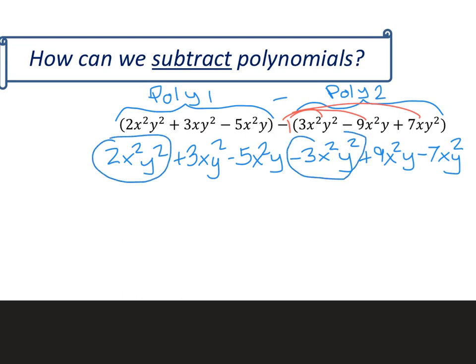So let me go ahead and circle these. This is a positive, and this is a minus 3x²y². So 2 minus 3 is a negative 1. You could put the negative 1 or you could just drop it. And definitely cross things out as you use them.